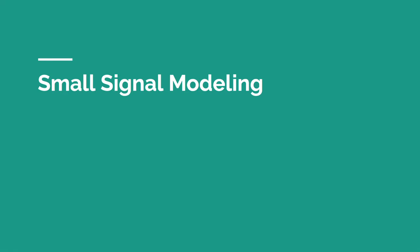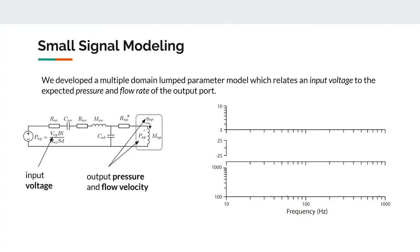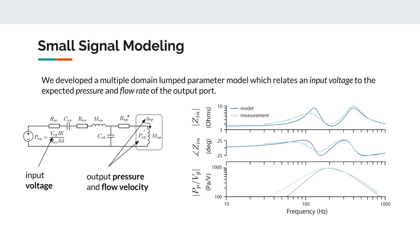Small signal modeling. We developed a multiple-domain lumped parameter model which relates an input voltage to the expected pressure and flow rate of the output port. We compared this model with an electrical impedance measurement looking into the system, and here we see that the two are in close agreement. We also looked at the transfer function of the output port pressure given an input voltage. Again, we found that our model captures much of the behavior of the system.